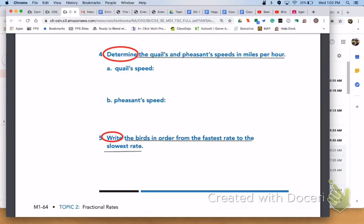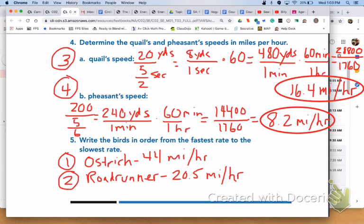Using the last two worked examples, please answer number 4 and 5 with your group. For number 4, here is the work that you should show using the worked example from above in order to determine the quail's speed. The quail's speed is 16.4 miles per hour. The pheasant's speed, again using the worked example from above. Here is what your work should look like.